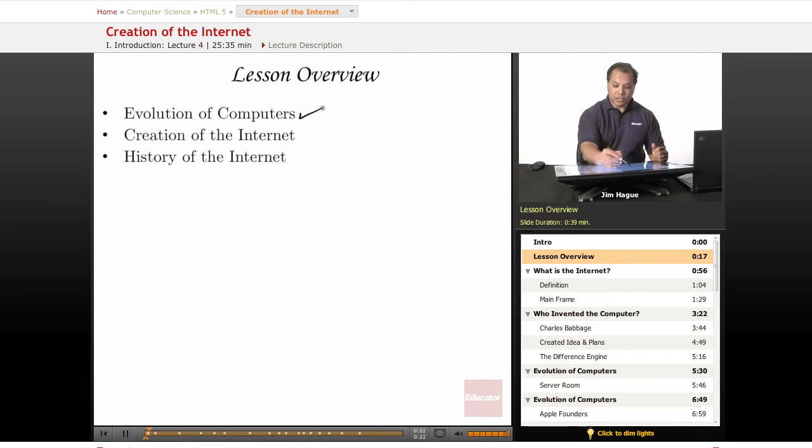We're going to talk about the evolution of computers - computers from yesterday, how it was invented, what it is today, and how did it evolve to the handheld devices that we see every day. The creation of the internet. Just like everything else, the internet was created. How was it created? Whose idea was it? I think that's important to know. And then finally, the history of the internet. We'll discuss the history back then, the internet today, and most importantly, the internet tomorrow. Let's go forward.